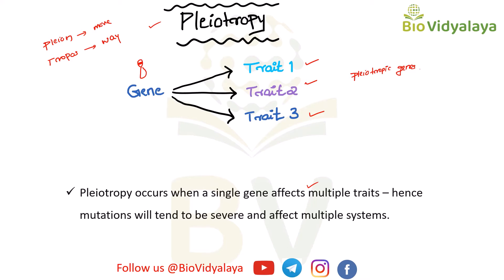Pleiotropy occurs when a single gene affects multiple traits. So, if any mutation of these pleiotropic genes occurs, that will affect multiple systems of our body or cause multiple changes in our body. Hence, mutation will tend to be severe and affect multiple systems.